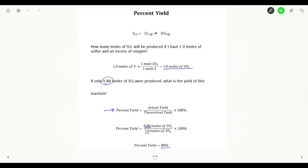Well, my 0.88 moles of sulfur dioxide, that has two sig figs. My 1.0 moles of sulfur dioxide also has two sig figs.